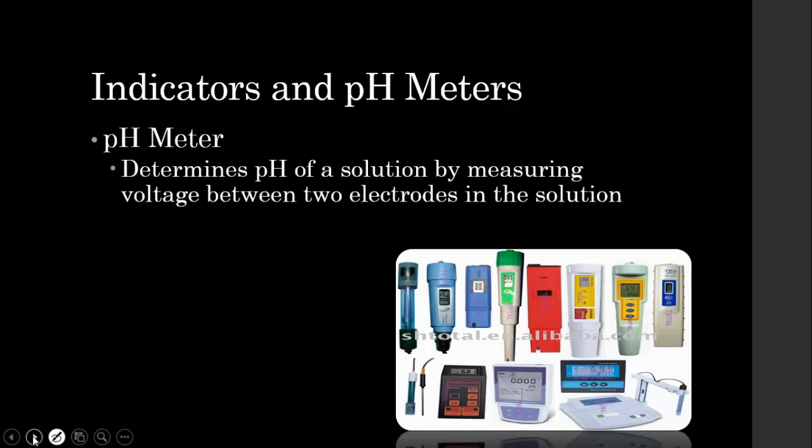pH meters determine the pH of a solution by measuring voltage between two electrodes in the solution. Because when you have pH, we measure the hydronium ion concentration. Well, hydronium ion is an ion, so you've got negative and positive charges.